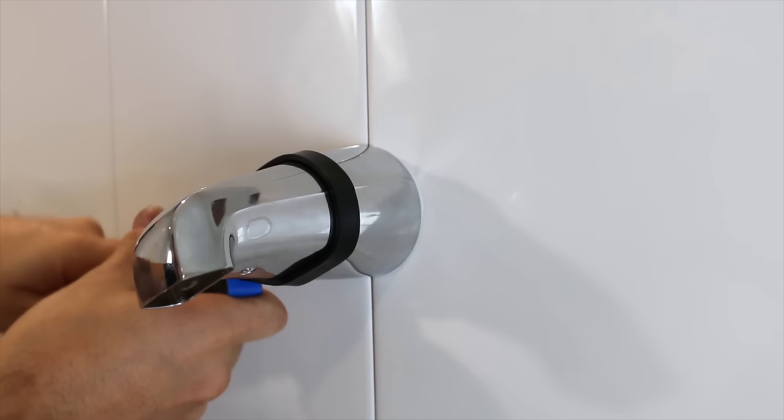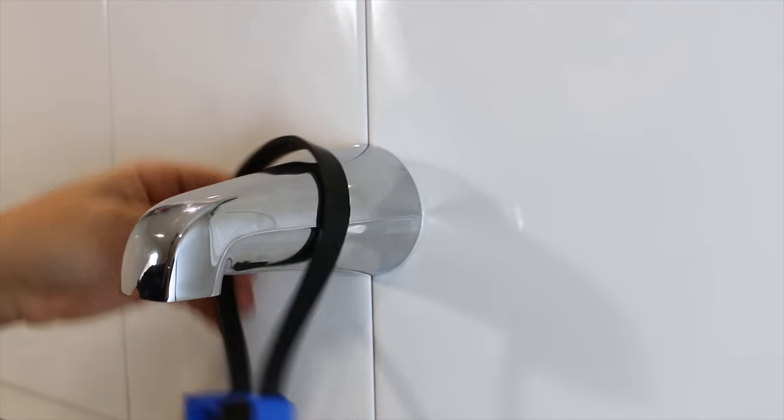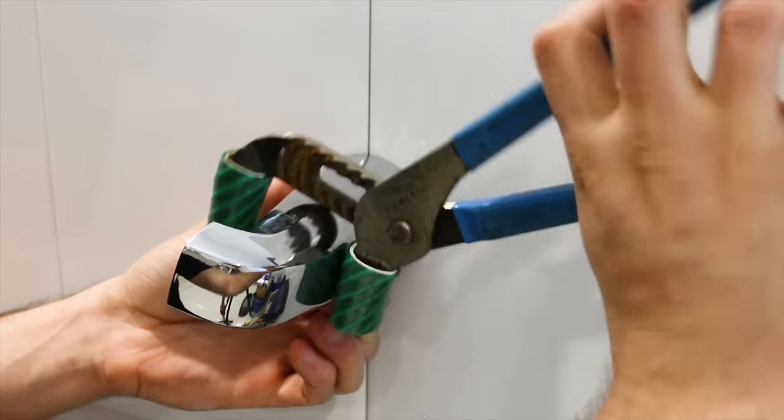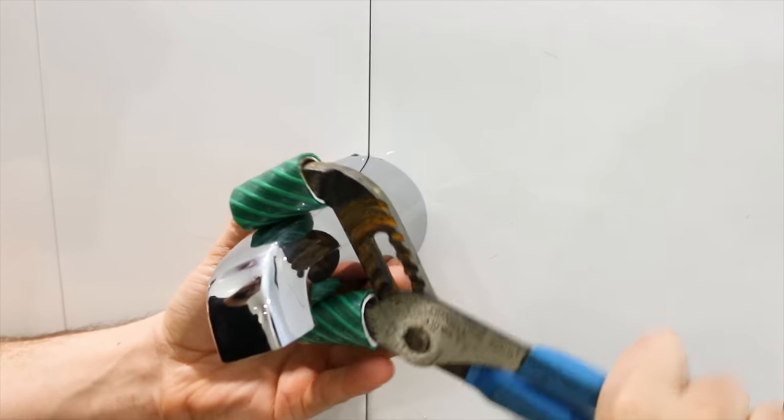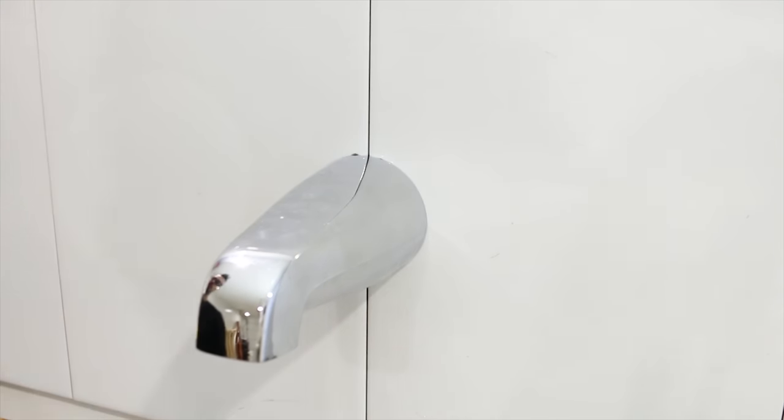When installing a bathtub spout for example, the best thing to do is to use a rubber strap wrench or even your plier handles will do the job. A neat little trick when using pliers though is to cut two scrap pieces off of a garden hose and use them on the jaws to protect the chrome from getting scratched.